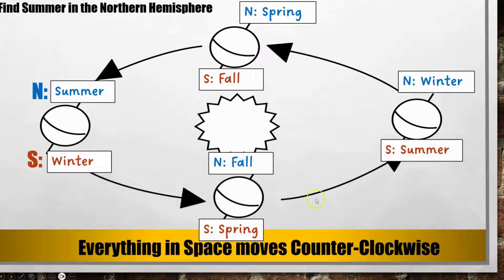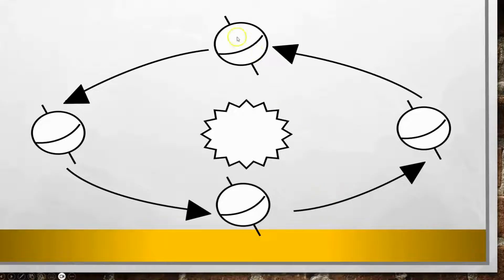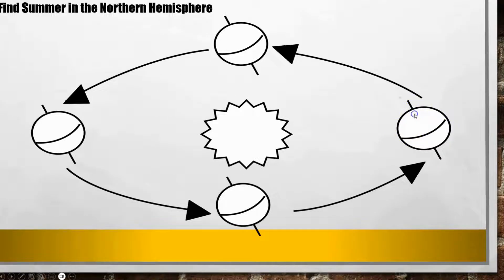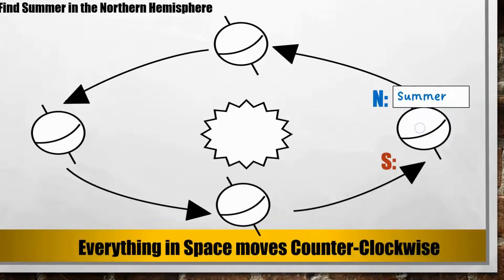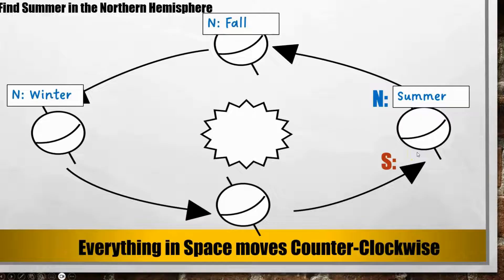Let's look at the next diagram. On this one all of them are tilted to the left. Again we're going to focus on the one on the left and the right and look for which one is tilted towards the sun. In this case the northern hemisphere is tilted towards the sun, so this is my summer in the northern hemisphere. Everything in space moves counterclockwise, so from here I label around: fall, winter, spring — all the way around. Those are my seasons in the northern hemisphere.